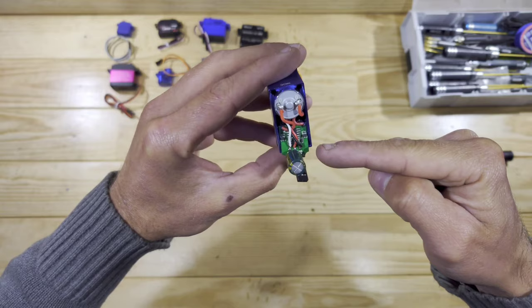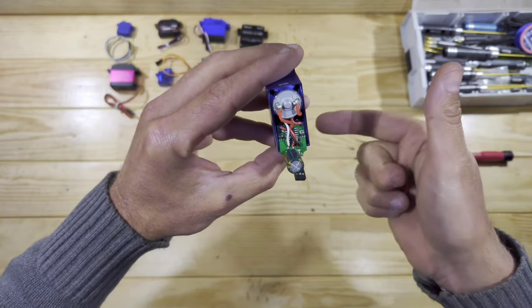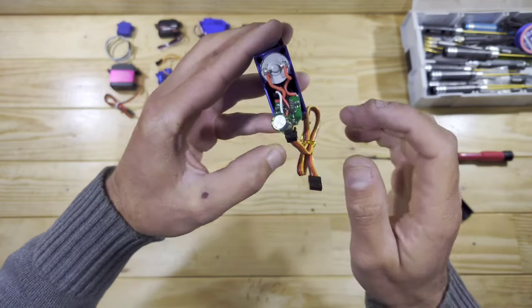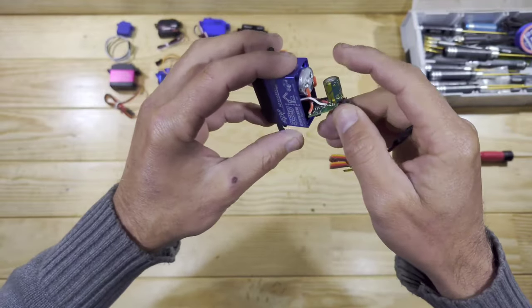When you are all done it should look something like this. The black one and the white one are just swapped over and the red one you didn't touch. So now it's time to put the servo back together again.